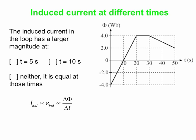The induced current is therefore proportional to the time rate of change of magnetic flux — delta flux over delta t. Since we have a flux versus time graph, how do we get delta flux over delta t? It's the slope. The thing that's proportional to the induced current is actually the slope of the flux versus time graph. So when we're asked about current, we want to think about slope.